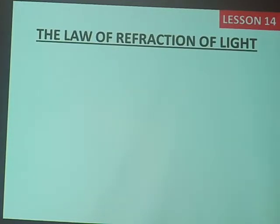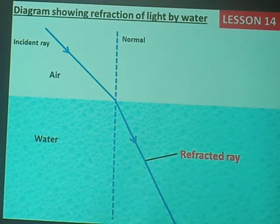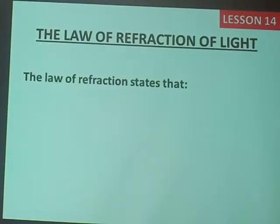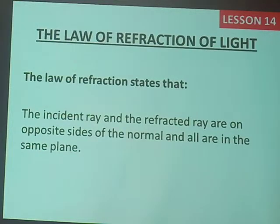Let's go back and see what I'm talking about. The incident ray is coming, the normal is in the middle, and the refracted ray is on the other side. The incident ray and the refracted ray must be on opposite sides of the normal, and all are in the same plane — meaning they are moving in the same direction but on opposite sides.